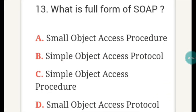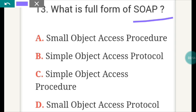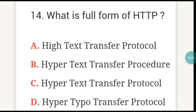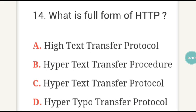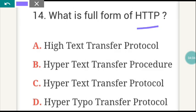The next question: what is the full form of SOAP? The answer is B — Simple Object Access Protocol. The next question: what is the full form of HTTP? The answer is C — Hypertext Transfer Protocol.